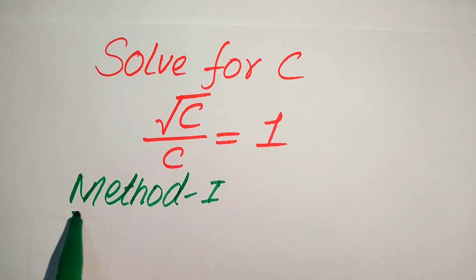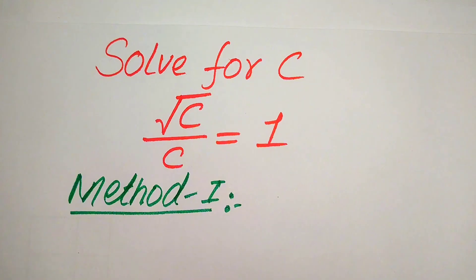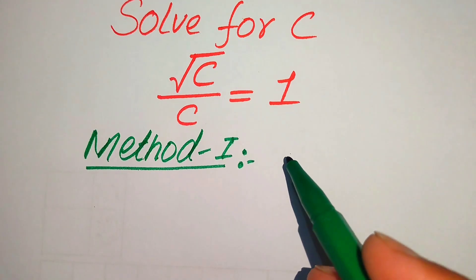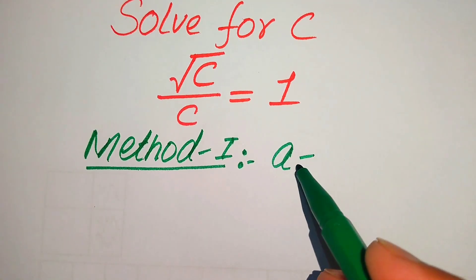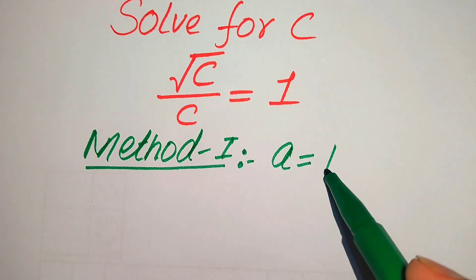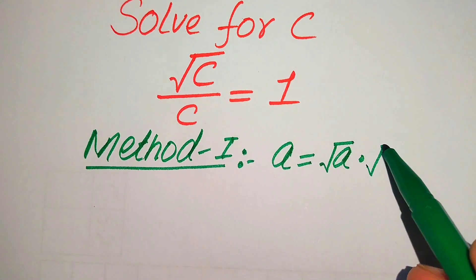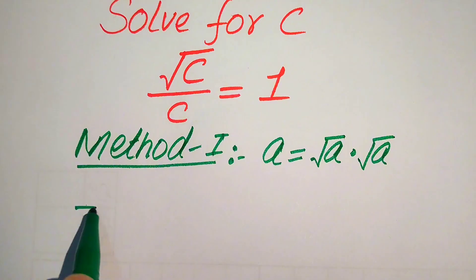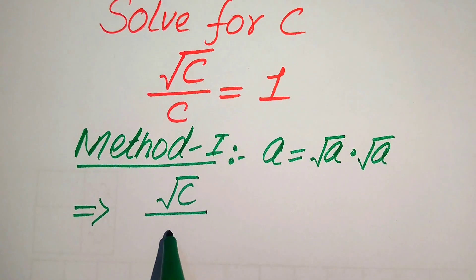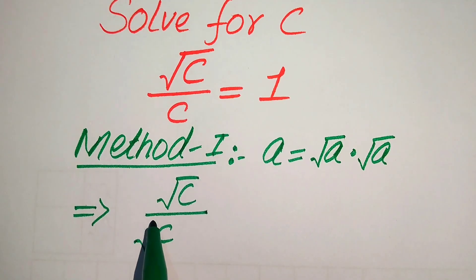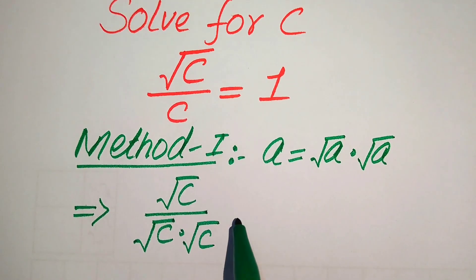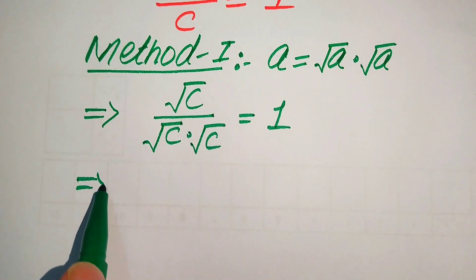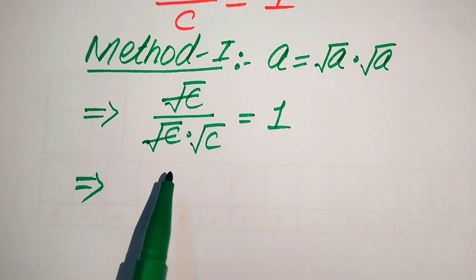In the first method, we focus on the denominator term. We know that any number a can be written as square root of a multiplied by square root of a. According to this rule, we write C as square root of C multiplied by square root of C. So the expression becomes square root of C divided by square root of C multiplied by square root of C, equals 1. The square root of C in the numerator cancels with one in the denominator.